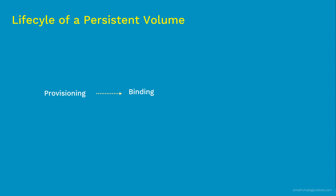In that case, the persistent volume claim request will wait until at least a 100 GiB persistent volume is created and added to the pool. In another scenario, if you requested 10 GiB but the available storage piece is 12 GiB, the PVC will bind to the 12 GiB PV — because the user will always get at least what they asked for, though the volume may be slightly in excess. The point is it's okay to be a bit over, but not double.